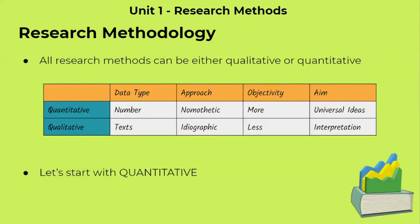In terms of data type, quantitative research is numerical while qualitative is textual. For example, quantitative research involves numbers and statistics, while qualitative involves interview transcripts and paragraphs of interpretation. Their approaches also differ: quantitative takes a nomothetic approach while qualitative takes an ideographic approach. Quantitative is very objective with little bias, while qualitative is more subjective and prone to biases in researcher interpretation.